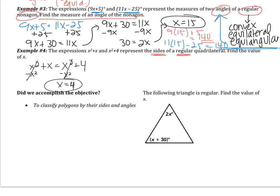So that was the video. I want to return to our initial objective, which was to classify by sides and angles. So classifying by sides, that's saying the figure is a triangle, it's a pentagon, it's an octagon. Classifying by angles, that's saying the figure is equiangular, the figure is regular, etc.